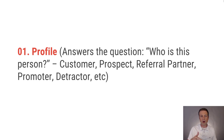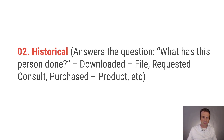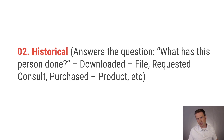You'll notice these categories are numbered — I'll get into that later. The second category is historical, which generally answers the question: what has this person done? Have they downloaded a file, requested a consultation, made a purchase? A lot of people also use the name 'activity.' Historical or activity tags help you identify the actions somebody is taking.